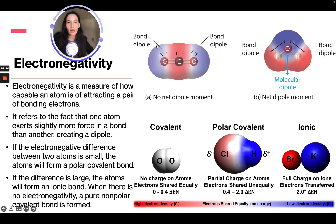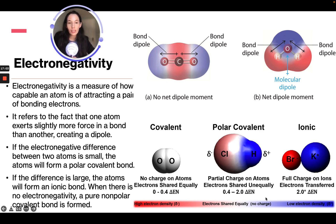A bond dipole means one atom exerts slightly more force on the bond than another. We can see this with a water molecule, showing the polarity. In a covalent bond, there is no charge on atoms and electrons are shared equally. In a polar bond, electrons are partially shared unequally, giving partial charges. In an ionic bond, there is a full charge on atoms and electrons are transferred completely. Those are the different types of bonds.